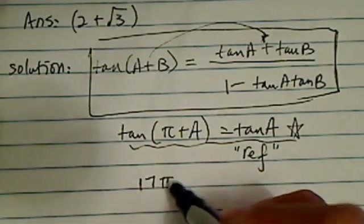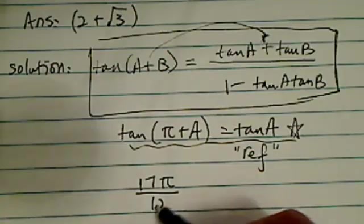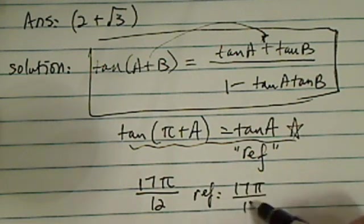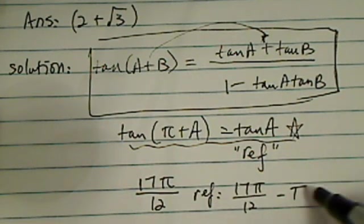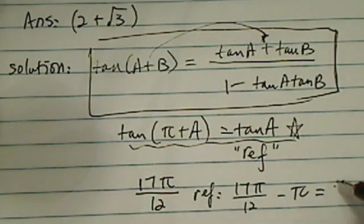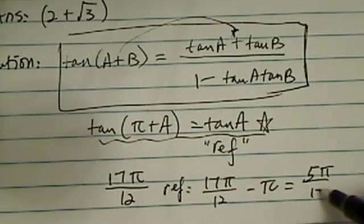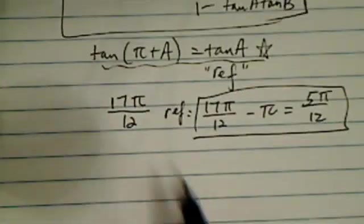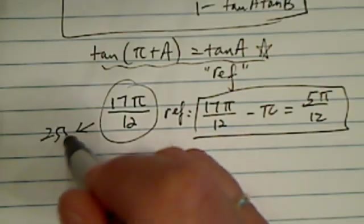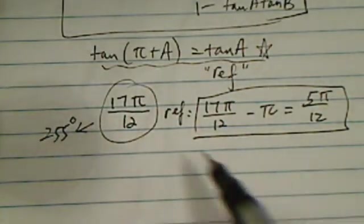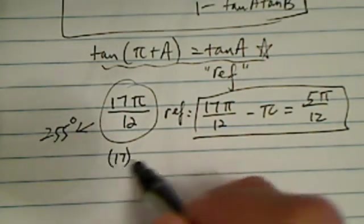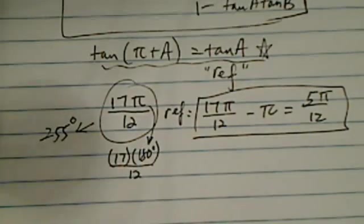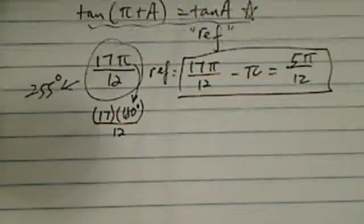So for instance, in this case of 17 pi over 12, the reference angle you can calculate by taking pi away, and that gives you 5 pi over 12. This is a much smaller angle. By the way, this angle is 255 degrees. The way you can find that is do 17 times 180 degrees divided by 12 because pi is really 180 degrees. That's just a side note.